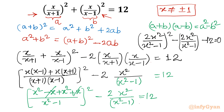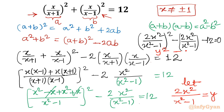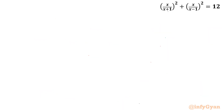You can see this is quadratic in the expression 2x²/(x²−1). So I introduce the substitution y = 2x²/(x²−1), which transforms the equation into y² − y − 12 = 0. Let's solve this quadratic equation.